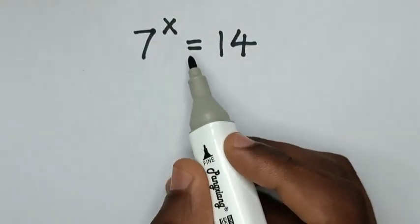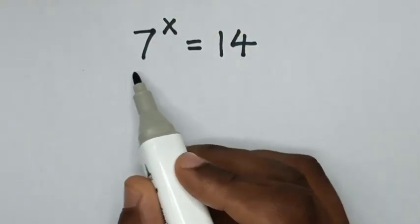Hello! How to solve 7 to the power of x equals 14 to find the value of x from this equation.